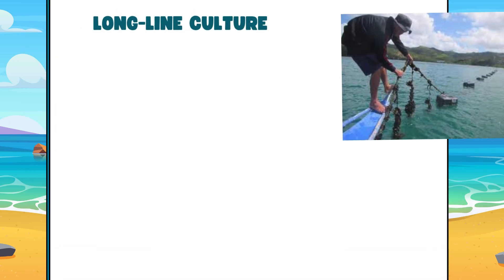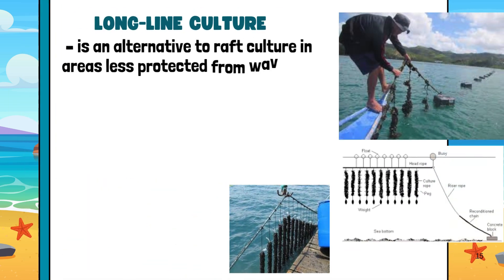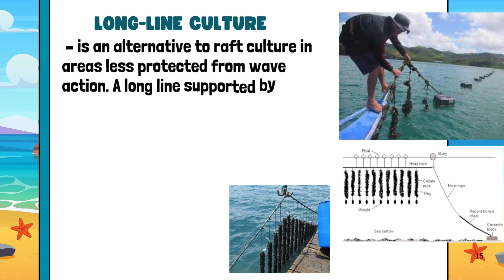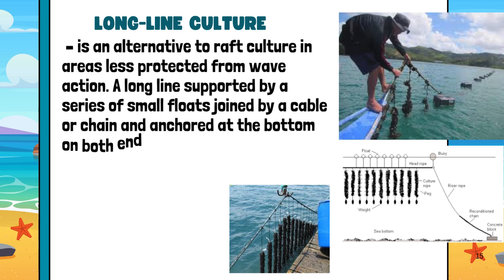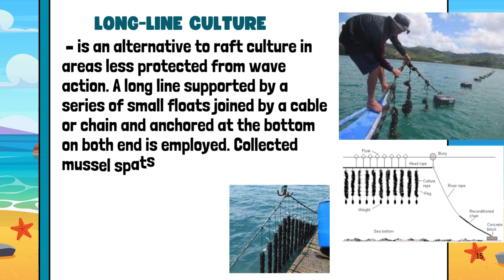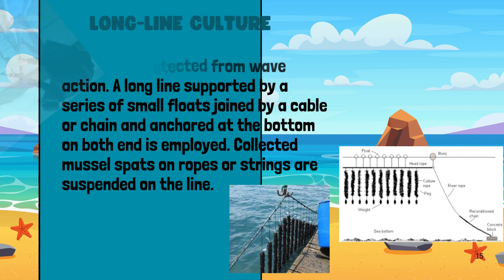Long line culture is an alternative to raft culture in areas less protected from wave action. A long line supported by a series of small floats joined by a cable or chain and anchored at the bottom on both ends is employed. Collected mussel spats on ropes or strings are suspended on the line.